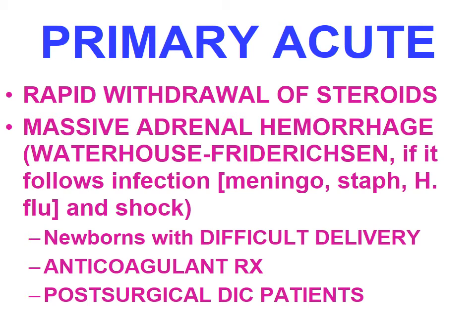Massive adrenal hemorrhage — Waterhouse-Friderichsen syndrome — is a rare syndrome characterized by an overwhelming septicemic condition, classically due to meningococcus, but it could also be due to Staphylococcus or H. influenzae. It is characterized by hypovolemia, shock, DIC with purpura, massive adrenal hemorrhage, and adrenal insufficiency; treatment is antibiotics. In newborns with difficult delivery, or patients on anticoagulant therapy, or with DIC, acute primary adrenal insufficiency can also present.